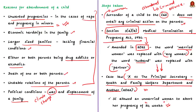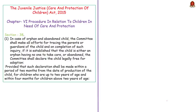Now let us see the procedure for declaring a child legally free for adoption. This procedure is given in Section 38 of the Juvenile Justice Care and Protection of Children Act 2015. In the case of an orphaned and abandoned child, the Child Welfare Committee shall make efforts for tracing the parent or guardians of the child.